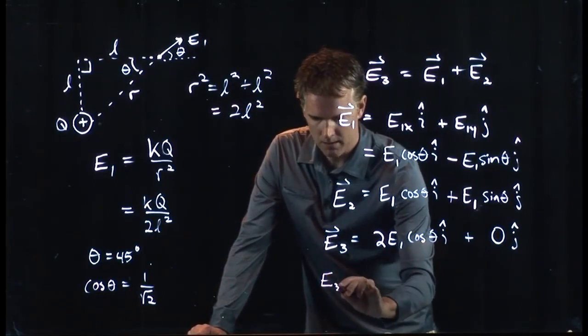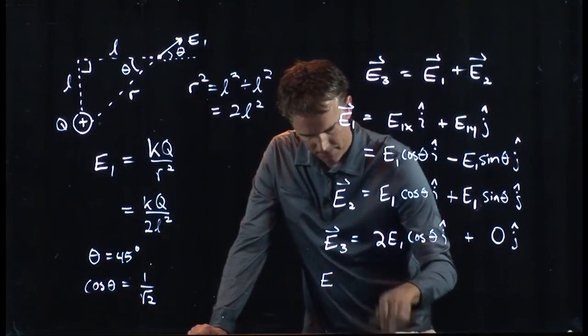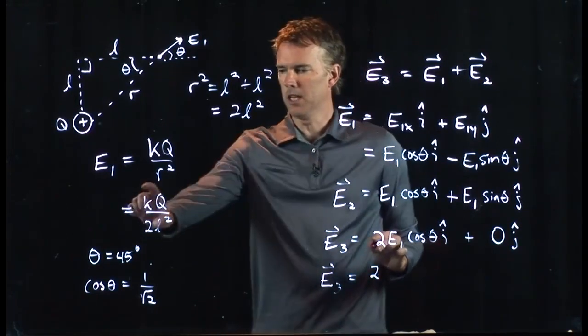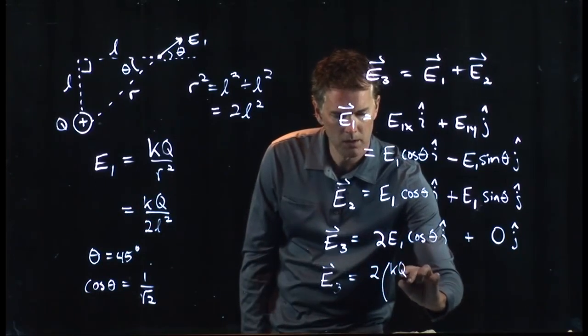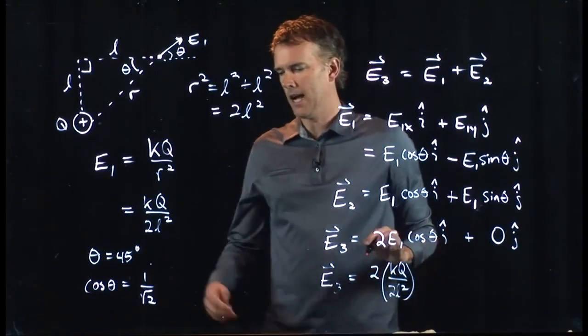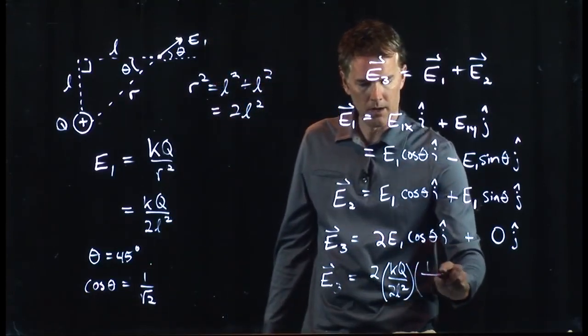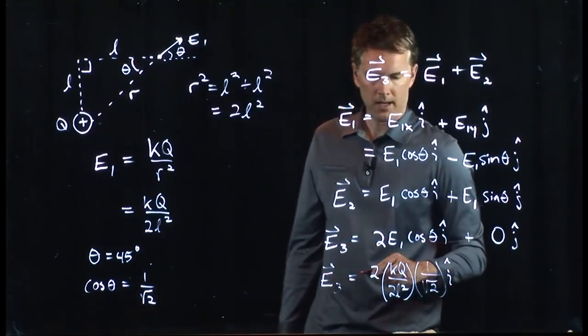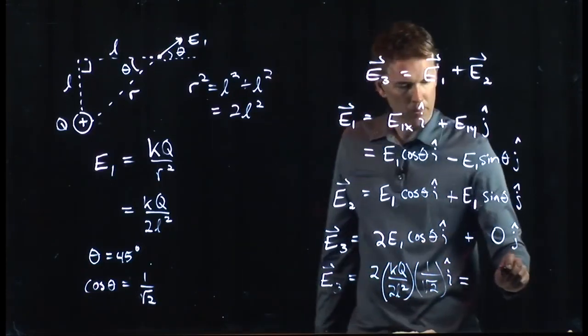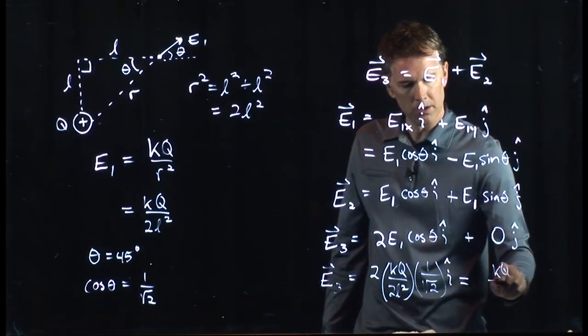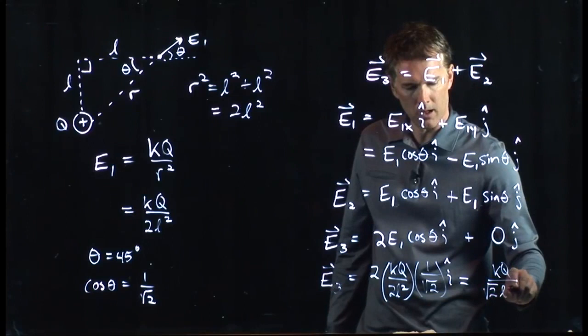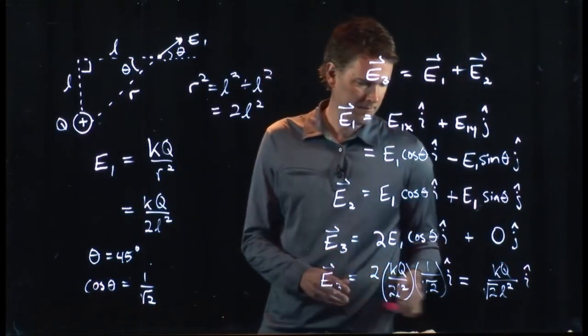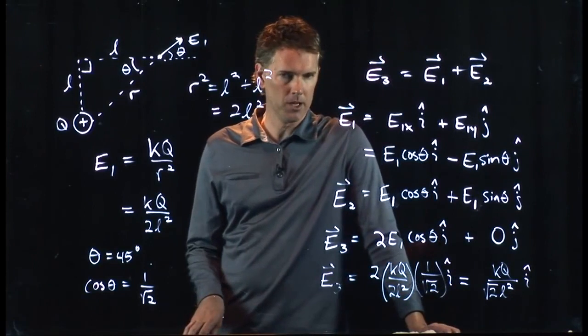E3. My 3 got a little funky. E3 is equal to 2 times E1. KQ over 2L squared times the cosine of theta, 1 over root 2. And we have an i-hat. And you can simplify that because the 2 goes away and we get KQ divided by root 2 L squared. All of that times i-hat. That is our resultant field E3 due to those two charges.